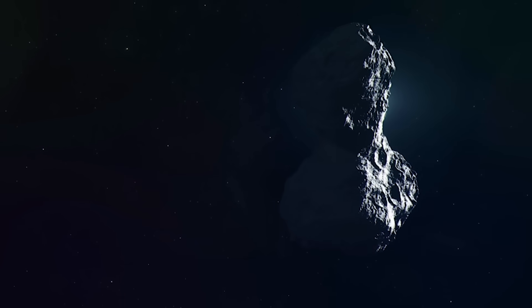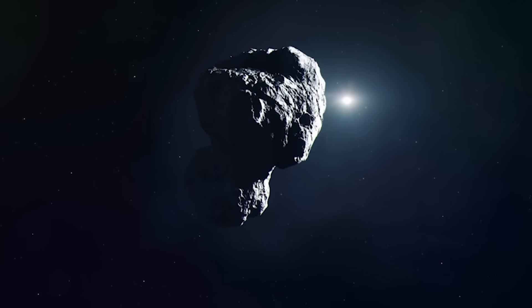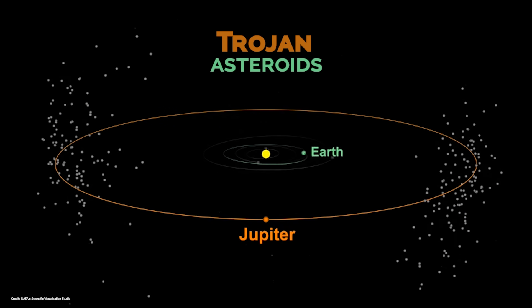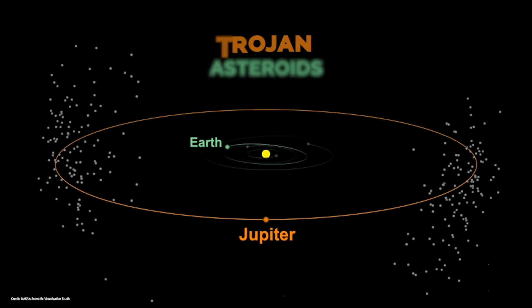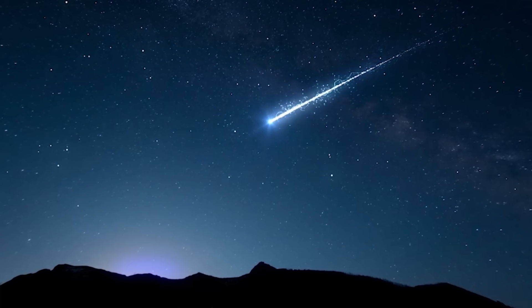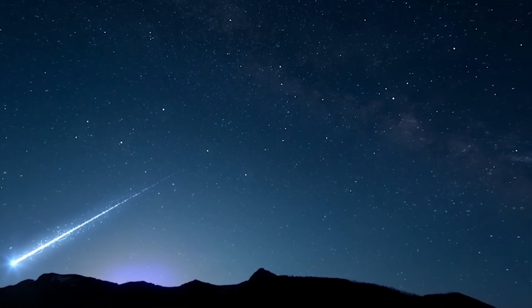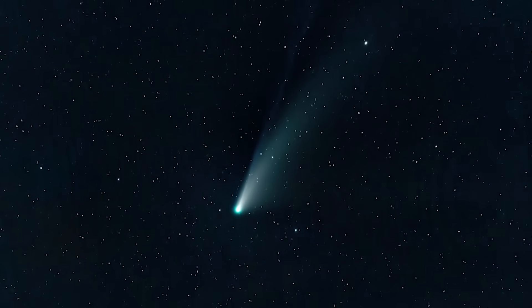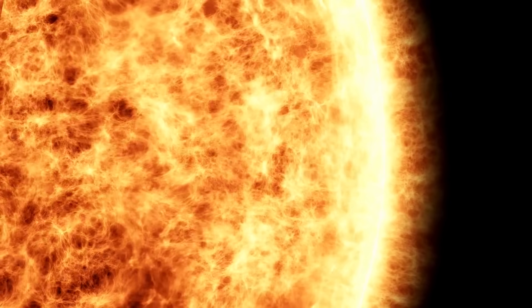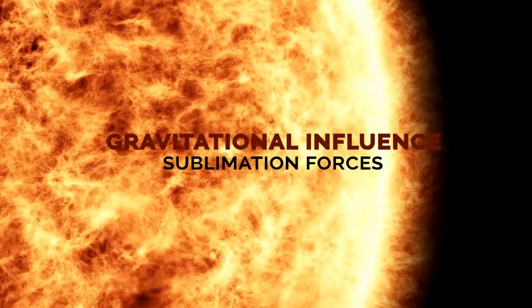Regarding orbital alignment, most asteroids share a similar plane and direction of motion as the planets. However, there are notable exceptions — the so-called Trojan asteroids, found at specific points in Jupiter's orbit, have elliptical paths that vary in inclination and direction. Comets present even greater diversity. Long-period comets, like the famous Halley's Comet, come from the region of the Kuiper Belt and the Oort Cloud, well beyond Neptune's orbit, and can have highly eccentric and inclined orbits. As they approach the Sun, they can significantly change their trajectory due to gravitational influence and sublimation forces as they heat up.